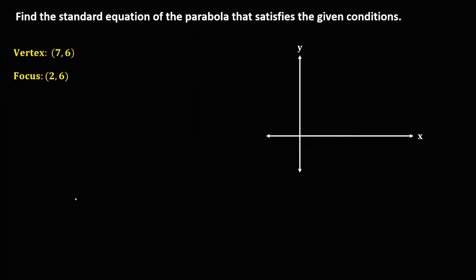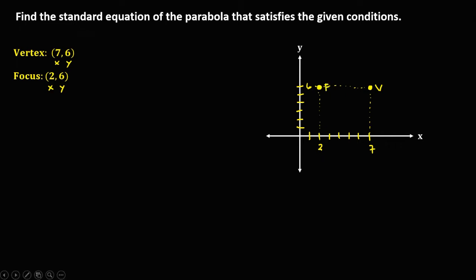First we need to graph this parabola from the given coordinates. For the vertex, x is 7 and y is 6, so we plot 1, 2, 3, 4, 5, 6, 7 on x and 1, 2, 3, 4, 5, 6 on y — this is the vertex. For the focus, x is positive 2 and y is 6, so we plot that point as the focus.